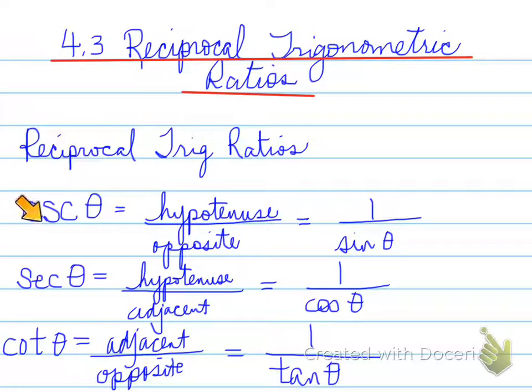So one more time. Cosecant is the reciprocal of sine, the flip of sine. Secant is the flip of cosine. And cotangent is the flip of tan. The idea here is that cosecant and sine, the reciprocals, do not begin with the same letter. Secant and cosine are reciprocals of each other. They don't begin with the same letter. And finally, cotangent and tan, and it's very easy to figure out that cotangent belongs with tan.